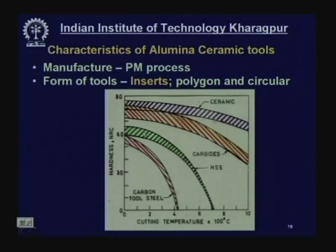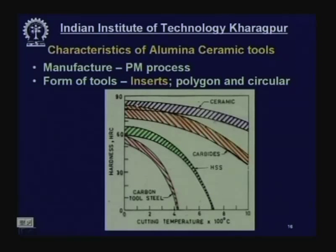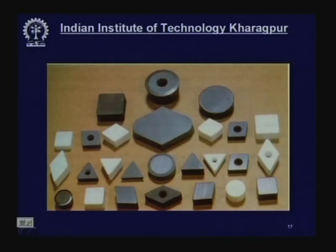For cemented carbides, the hardness is quite large and drops slowly with rise in temperature — up to 700–800°C these tools can be very comfortably used. For plain alumina ceramics, at ambient temperature hardness is more or less the same as carbides, but at high temperature the hardness is retained much better in ceramics, allowing machining of mild steel at higher speed than carbides, since high speed means high temperature.